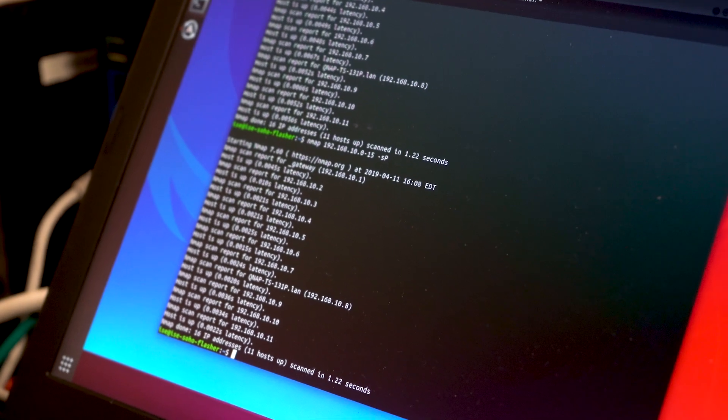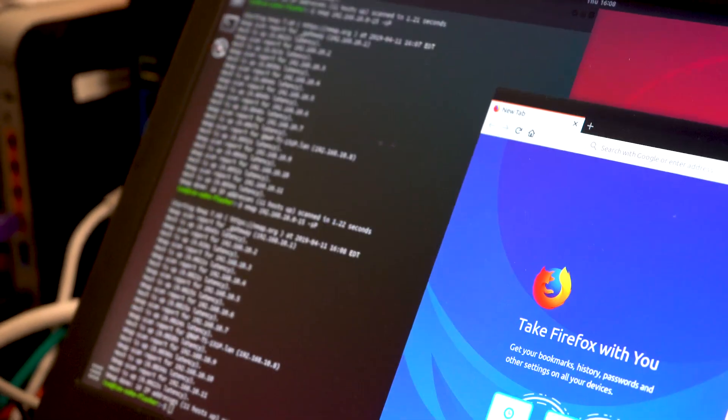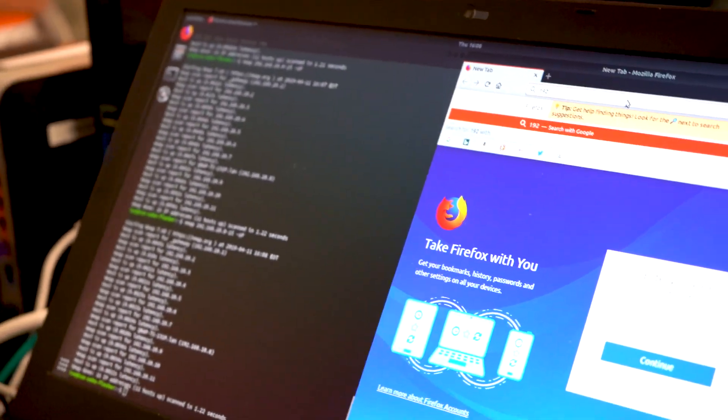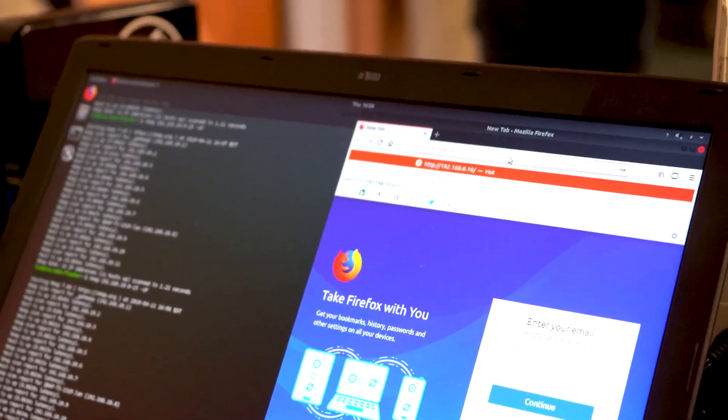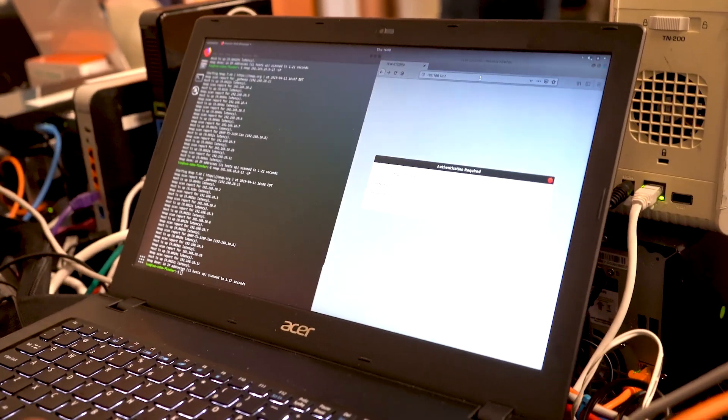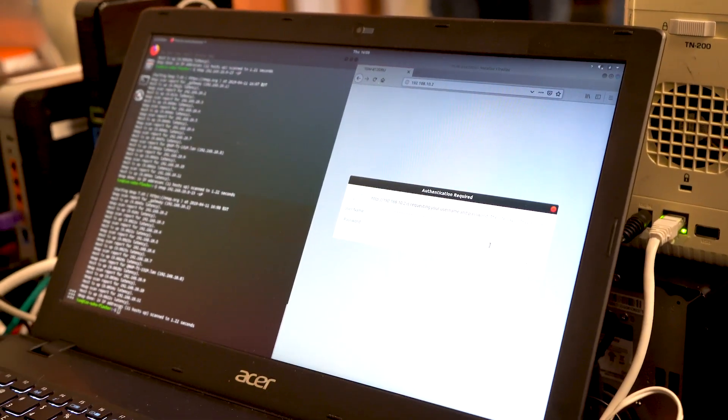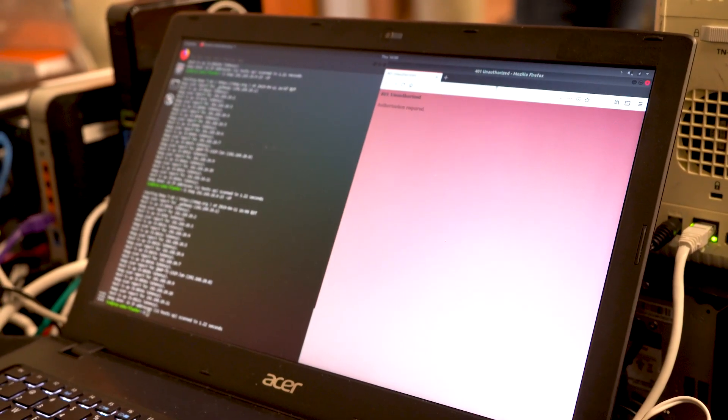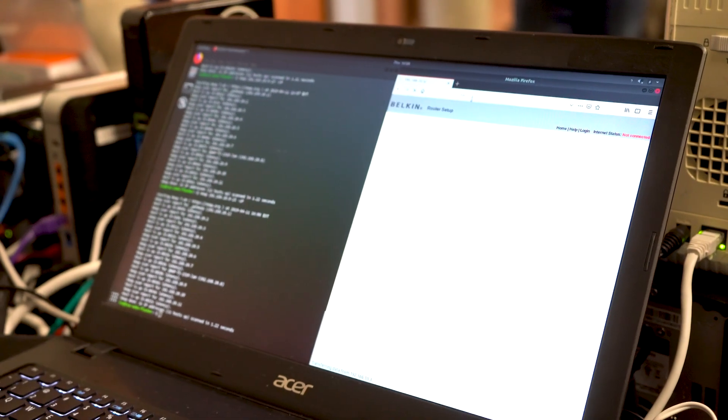So instead of trying to go through all of them and figure them out through the scanner, I'm just going to open them up in the web browser. I'm going to try to do 192.168.10.2. Let's see what that is. That one is the TEW. So that's this one. That's another one I want. Let's try 10.3. That's the Belkin. Sweet.